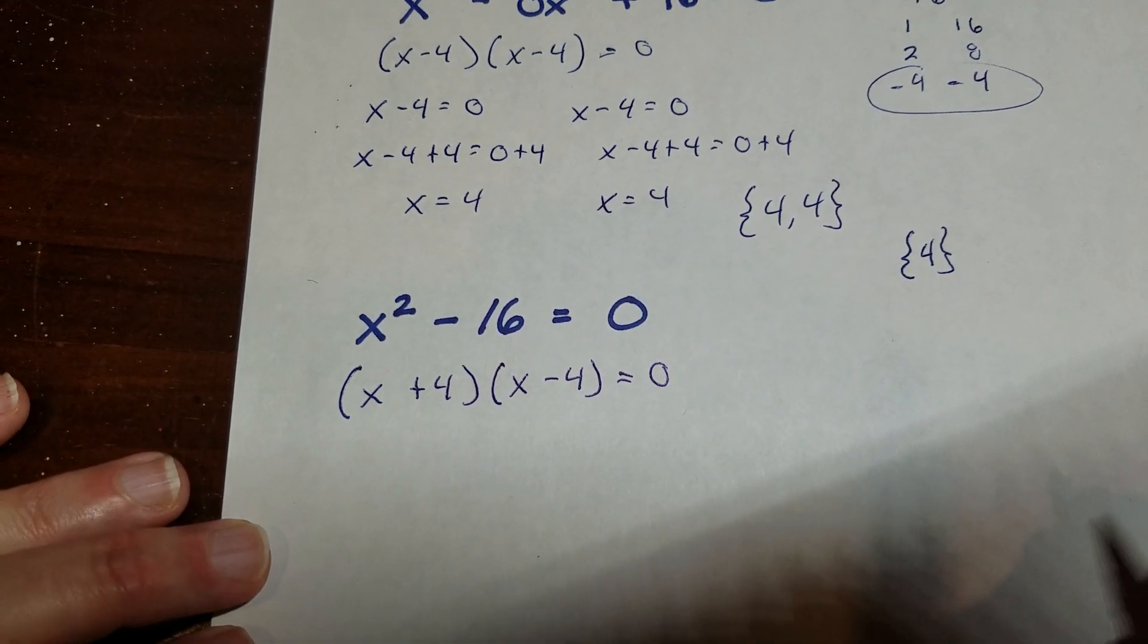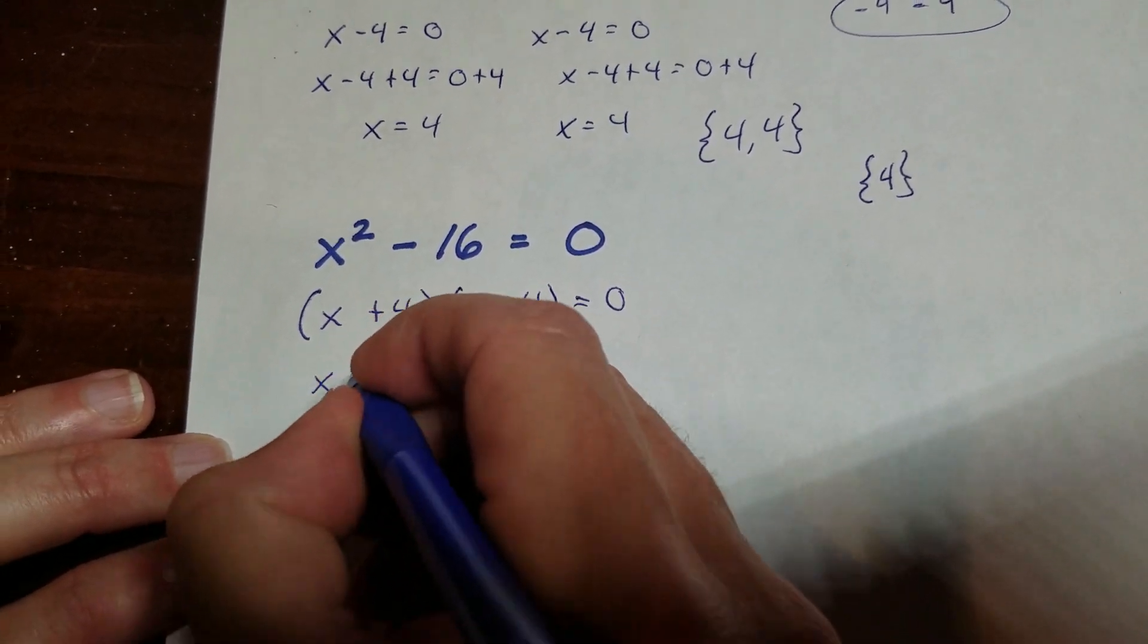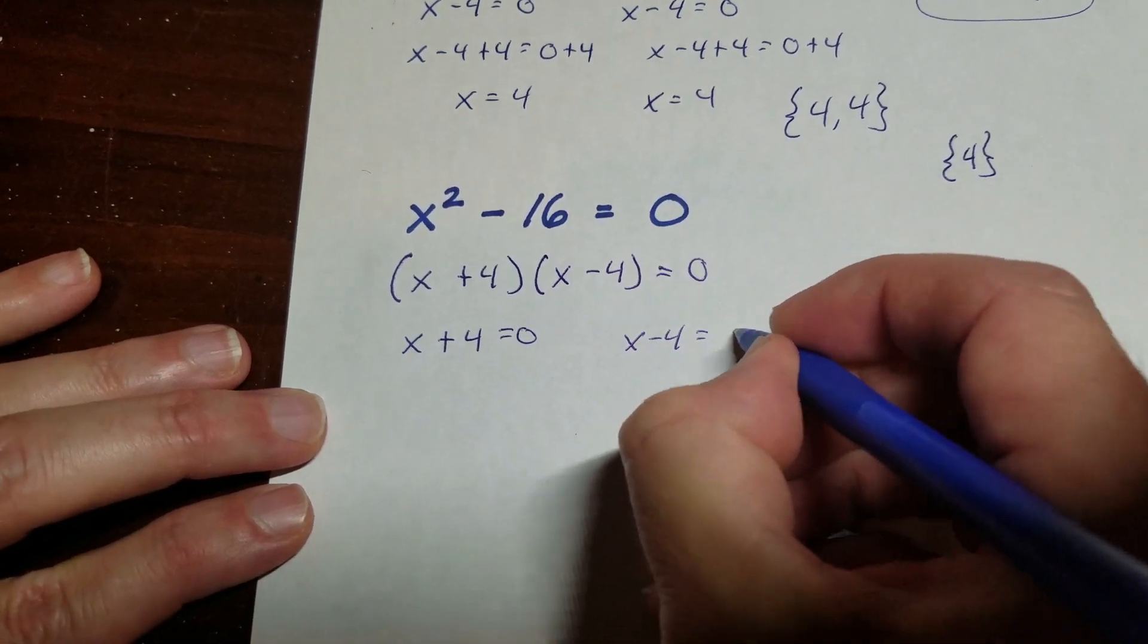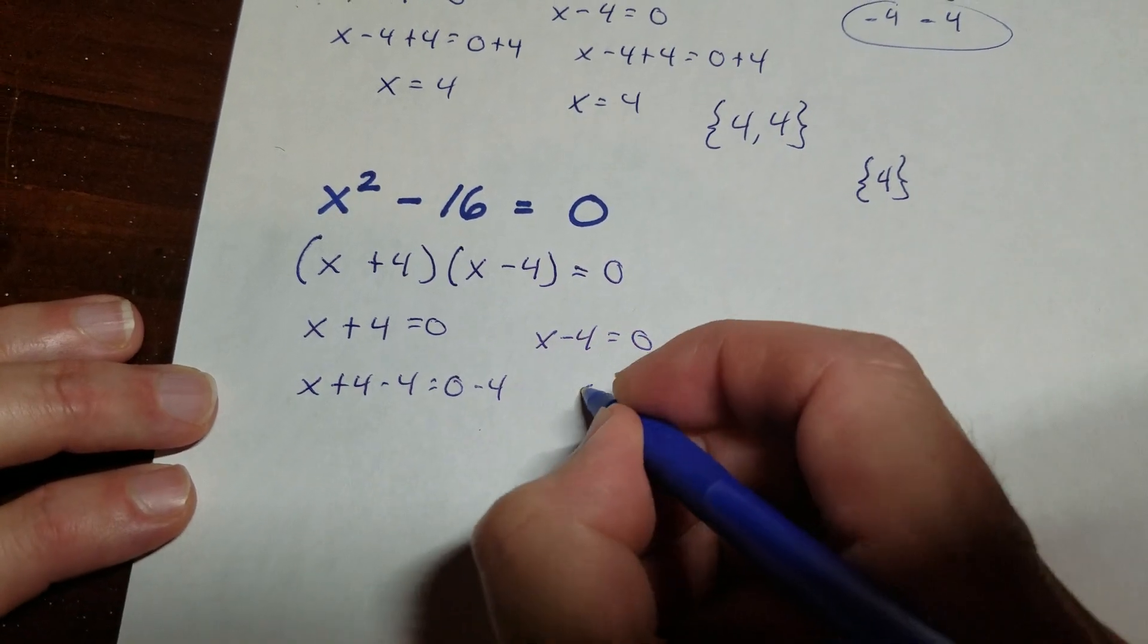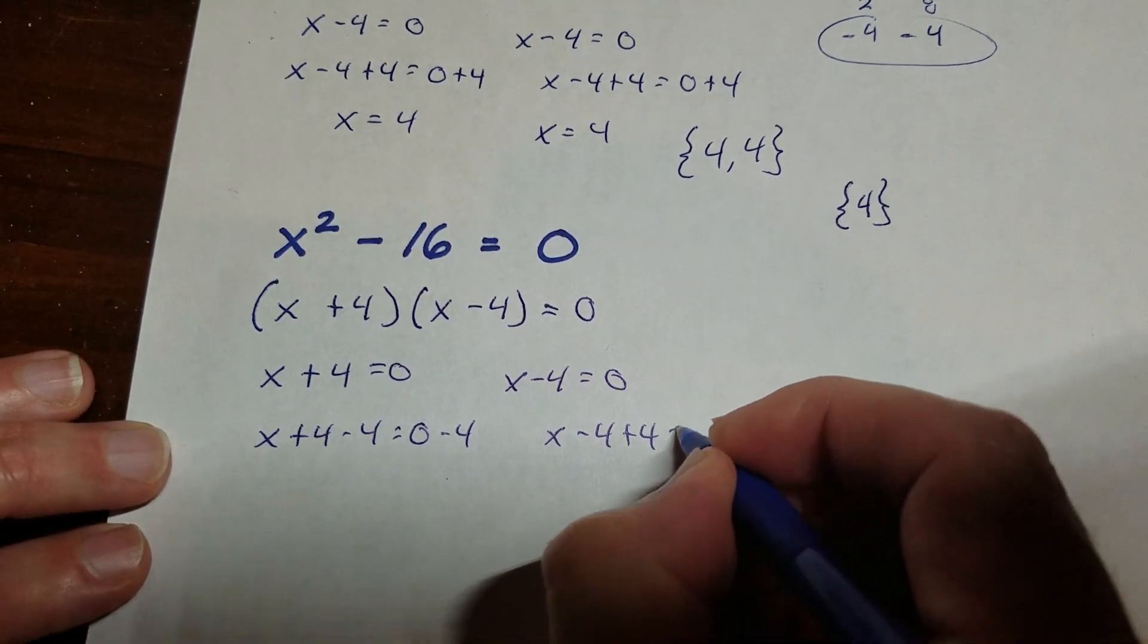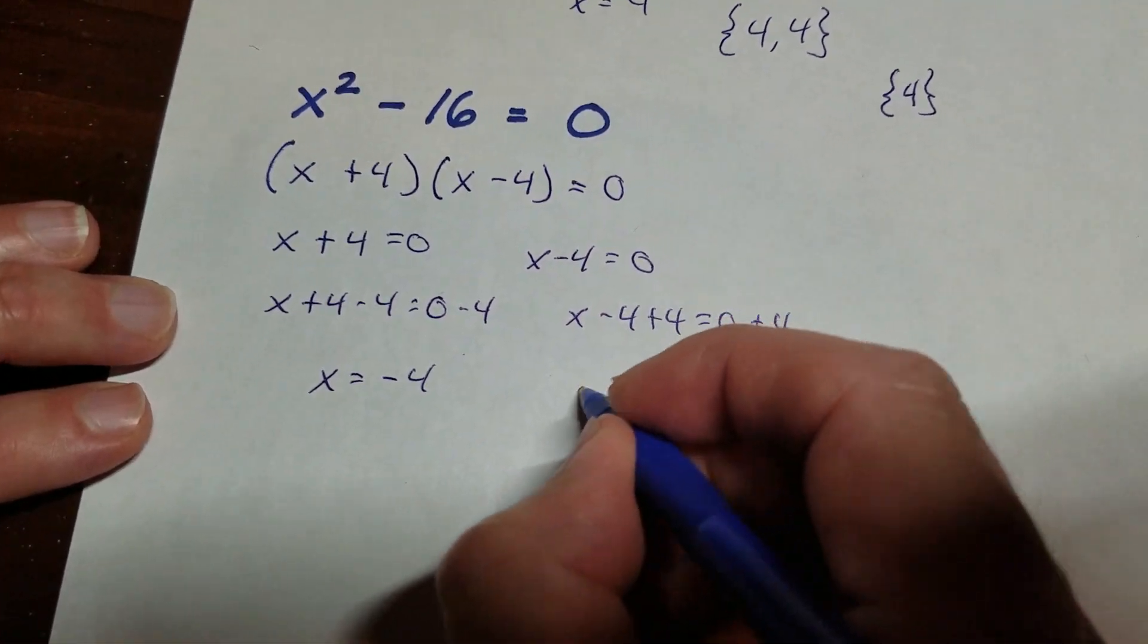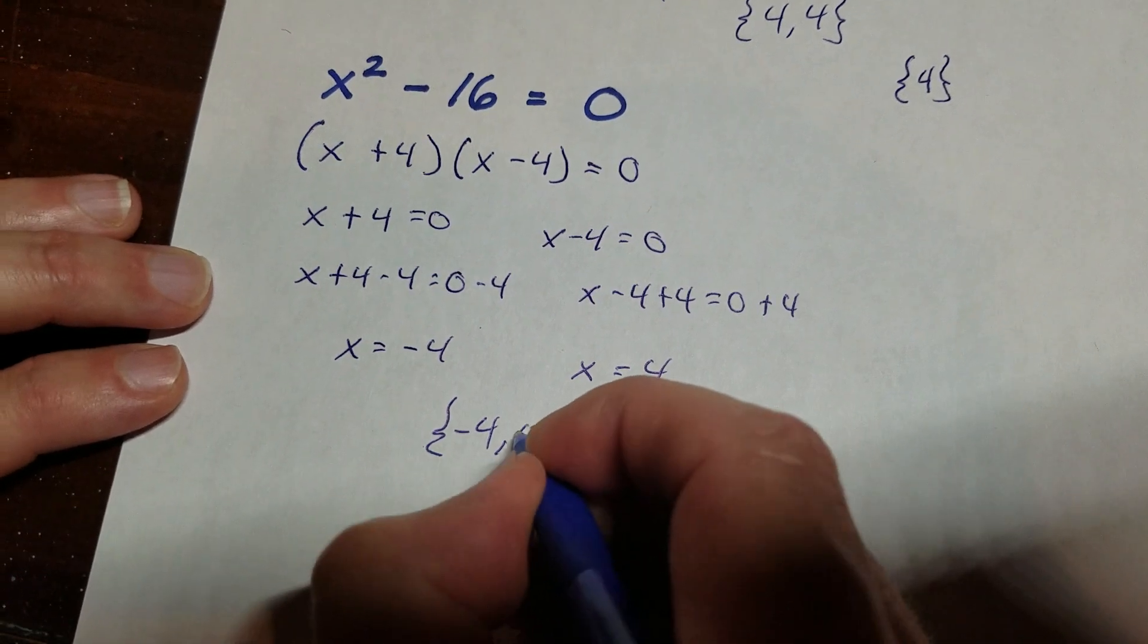And if you don't know how or why I just did that, then go back and review the video on the difference of squares. But then what will happen is you get x plus 4 is equal to 0, x minus 4 is equal to 0. You solve these little equations like this. And you get x is equal to negative 4, and x is equal to positive 4, and I get negative 4 and 4. So that's it.